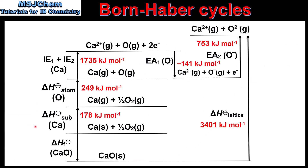Here we can see the Born-Haber cycle together with the enthalpy change values. If we apply Hess's law, the enthalpy change of formation is equal to the enthalpy change of sublimation of calcium, plus the enthalpy change of atomization of oxygen, plus the first and second ionization energies of calcium, plus the first and second electron affinities of oxygen, minus the lattice enthalpy of calcium oxide.